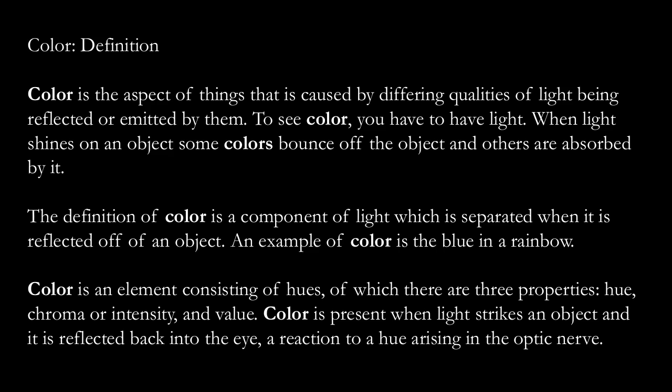When light shines on an object, some colors bounce off the object and others are absorbed by it. The definition of color is a component of light which is separated when it is reflected off an object. An example of color is the blue in a rainbow. Color is an element consisting of hues, of which there are three properties: hue, chroma or intensity, and value.